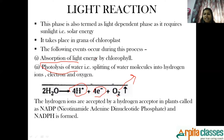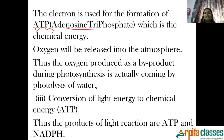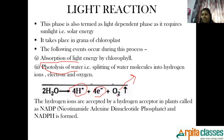Now, what is going to happen to the electron? This electron is going to be used for the formation of ATP molecule, that is adenosine triphosphate. This ATP is nothing but chemical energy. So the electron will be used for the formation of ATP, and this ATP is your chemical energy.